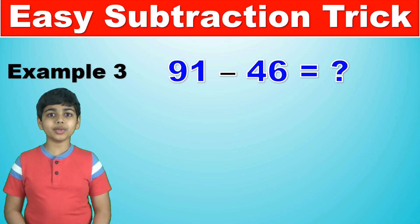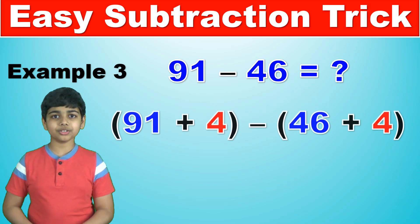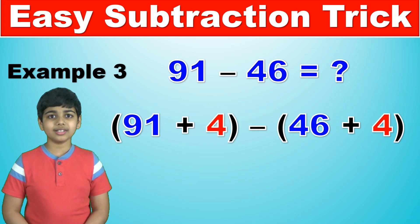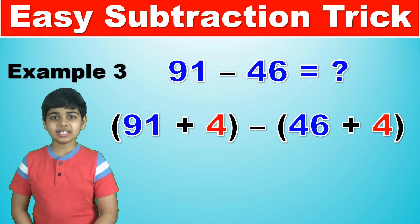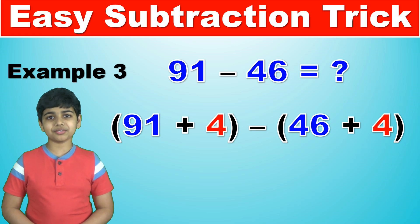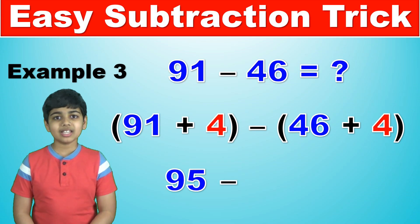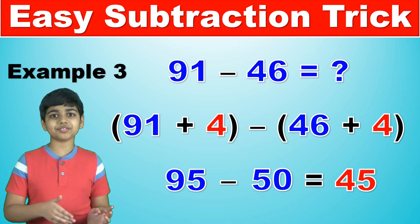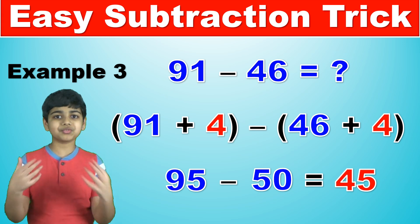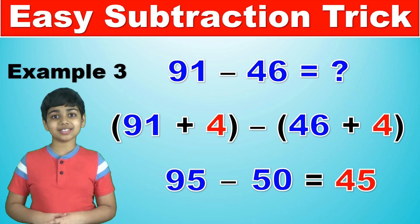And so we're just going to add the difference here, 4, to 91. And 91 plus 4 is, of course, 95. So now what we have is 95 minus 50. And of course, the answer of 95 minus 50 is 45. And that is the answer.